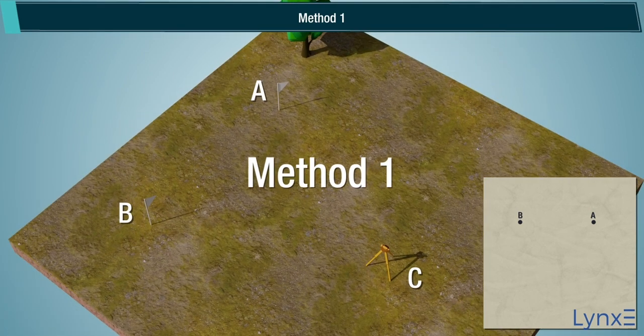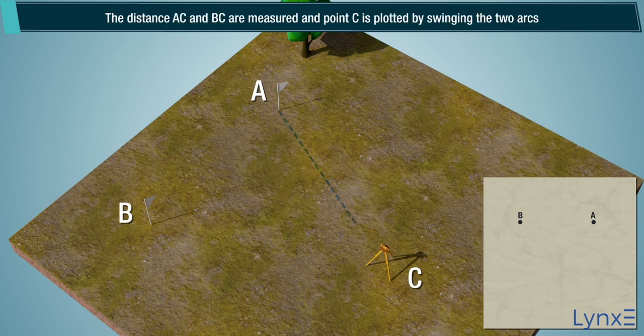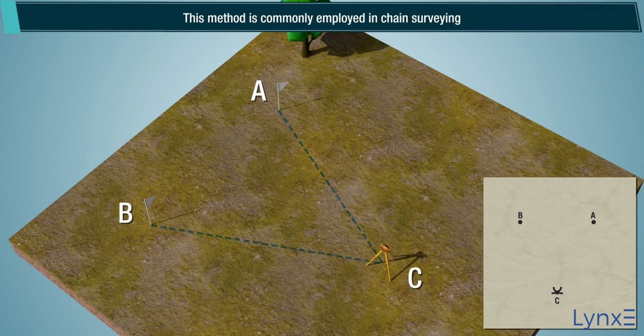Method 1: The distance A-C and B-C are measured, and point C is plotted by swinging the two arcs. This method is commonly employed in chain surveying.